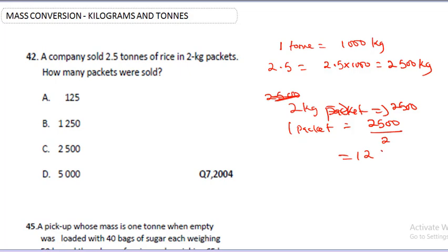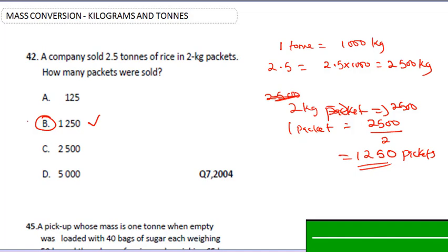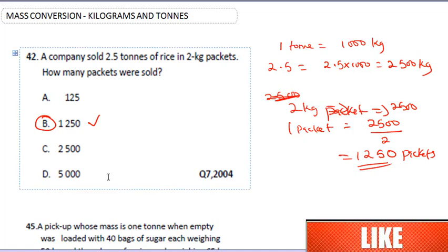So that should be sold in 1250 packets, so the correct answer here is B. The main thing you need to understand is that one ton gives you exactly 1000 kg. Once you establish this fact, you can solve any of these questions.